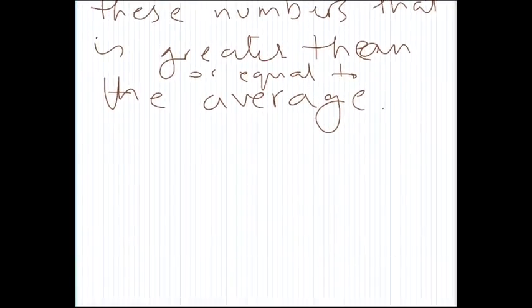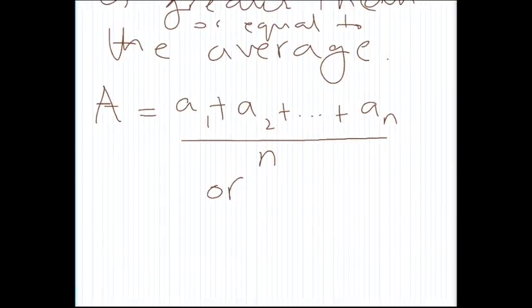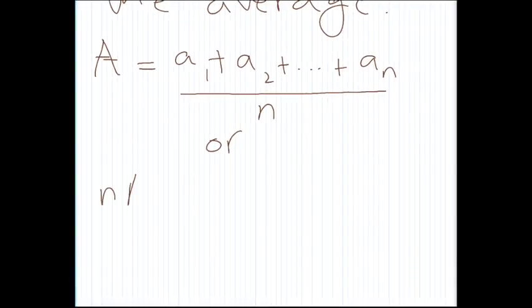is our universal truth here? The universal truth here is that the average A is equal to a1 plus a2 plus up to an divided by n, or we can say n times A is equal to a1 plus a2 plus up to an. Okay, now let's assume that our proposition